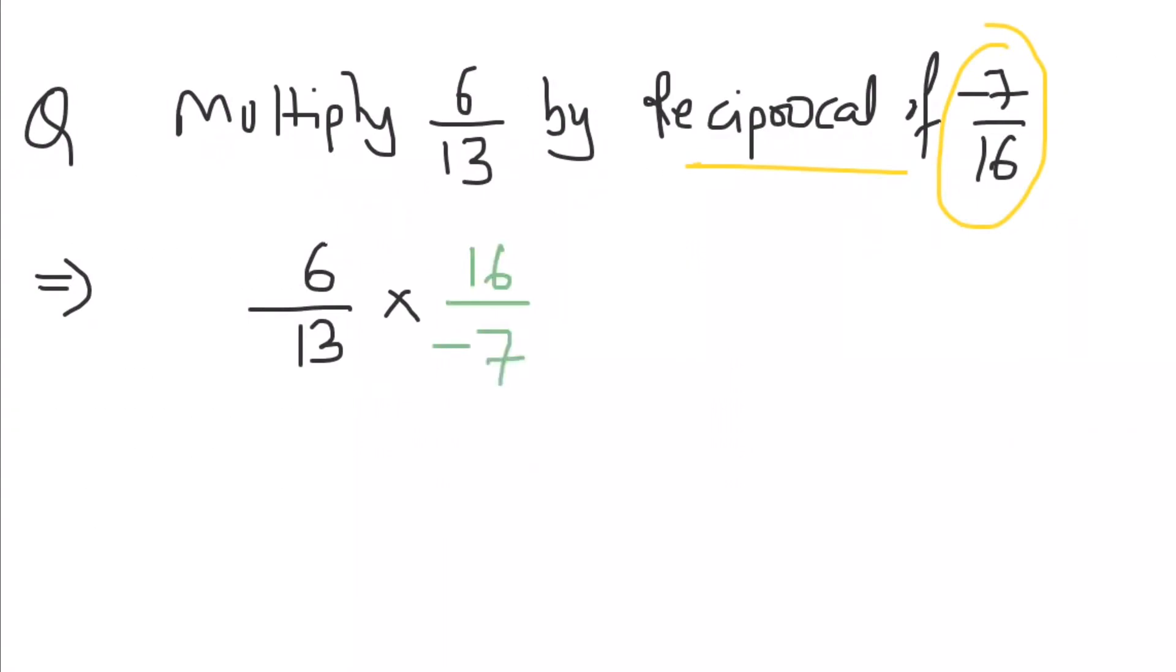And now you do cancellation. Minus sign in the numerator, so sixteen six is ninety-six and thirteen sevens are ninety-one.